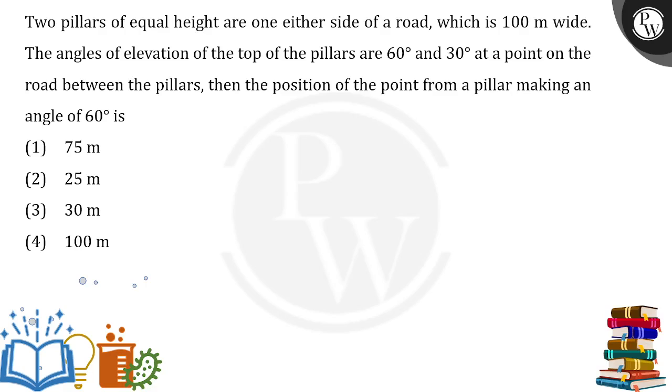Two pillars of equal height are on either side of a road which is 100 meters wide. So first of all we are having a road which is 100 meters wide. This is a 100 meter road.